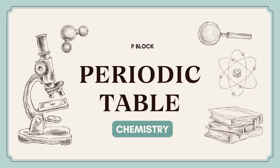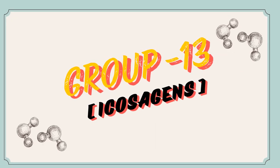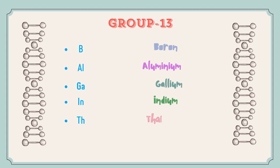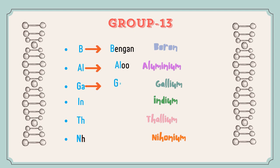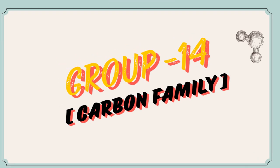The first one is Group 13. The elements are Boron, Aluminum, Gallium, Indium, Thallium, and Nihonium. The trick for this group is: 'Bangin Alu Gadget In Tella Nahi Hain' — quite interesting!